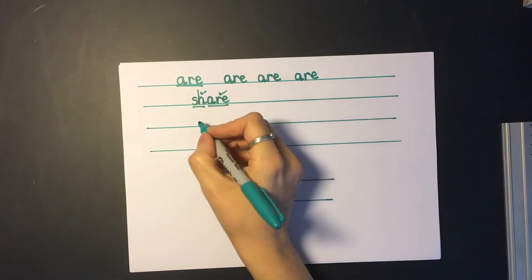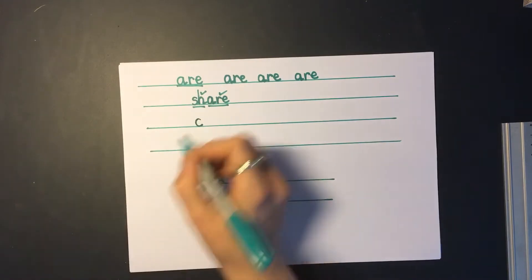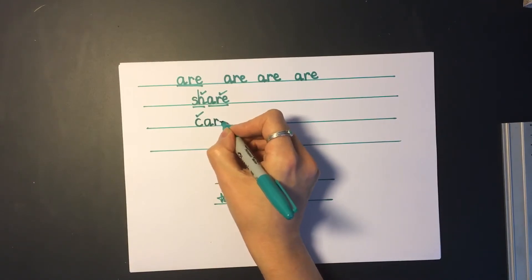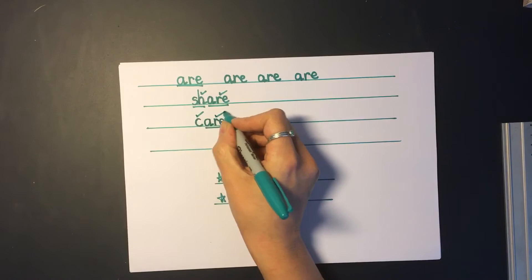Okay let's mark it. So we need the letter C to make the C sound. Give it a tick if you got that right. And then the air sound is spelt A-R-E. Give that a tick if you got it right.